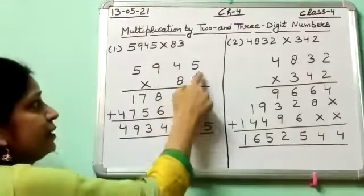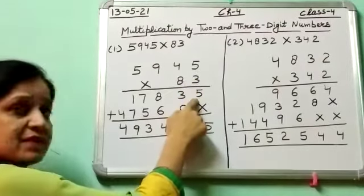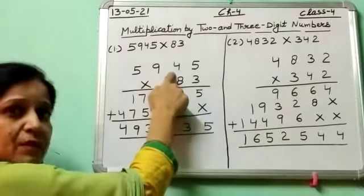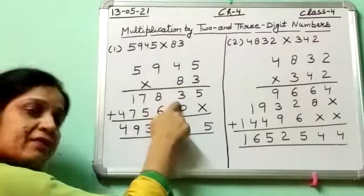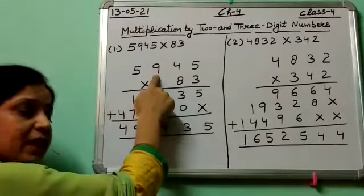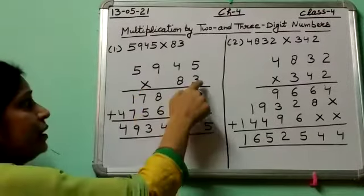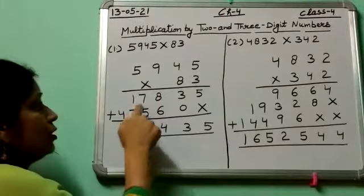3 times 5 is 15, 1 is carry. 3 times 4 is 12 plus 1 is 13, 1 carry. 3 times 9 is 27 and 1 is 28, 2 carry. 3 times 5 is 15 and 2 is 17.